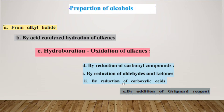Let us start with the preparation of alcohol. Today we are going to see some of the methods of preparation of alcohol. First, we will see about preparation of alcohols from alkyl halide. Second, by acid-catalyzed hydration of alkenes. Next, hydroboration that is oxidation of alkenes. Next, by reduction of carbonyl compounds - first by reduction of aldehydes and ketones, second by reduction of carboxylic acid, and the next method by addition of Grignard reagent.